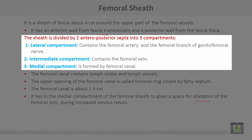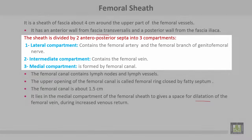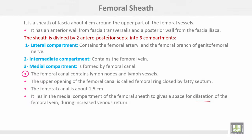The sheath is divided by two anterior-posterior septa into three compartments. The lateral compartment contains the femoral artery and the femoral branch of the genitofemoral nerve. The intermediate compartment contains the femoral vein. The medial compartment is the femoral canal, which contains lymph nodes and lymph vessels. The upper opening of the femoral canal is called the femoral ring and is closed by a fatty septum.